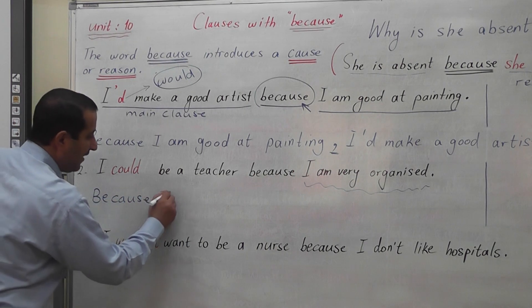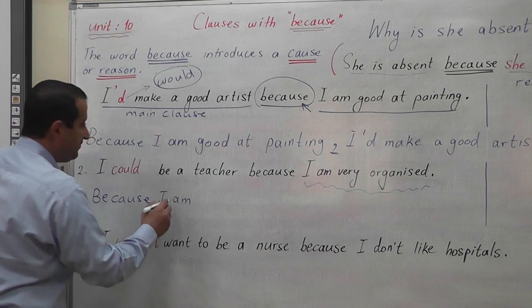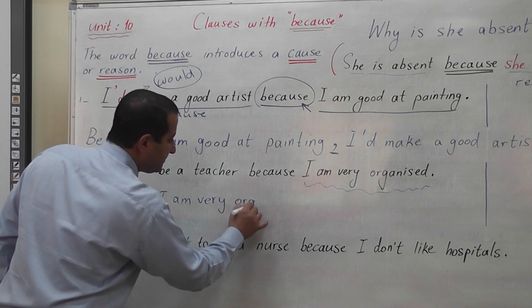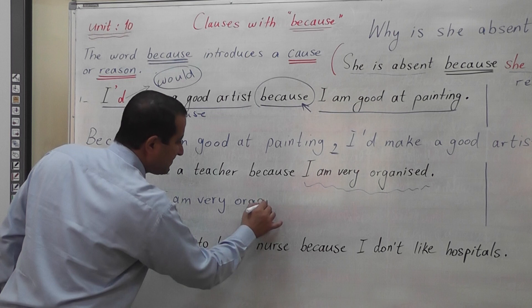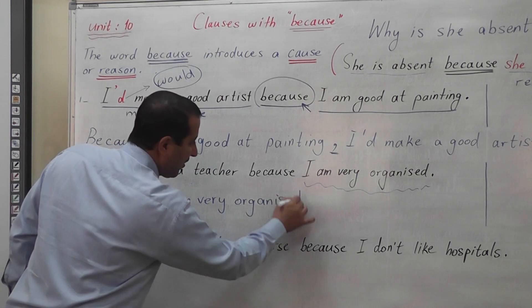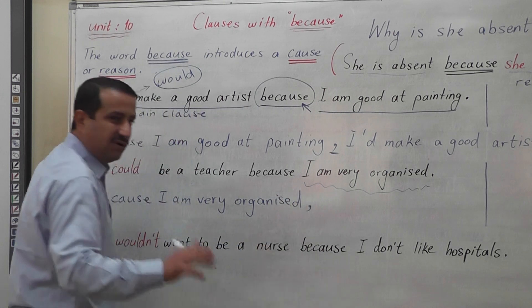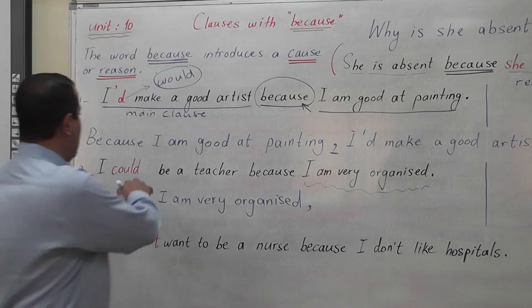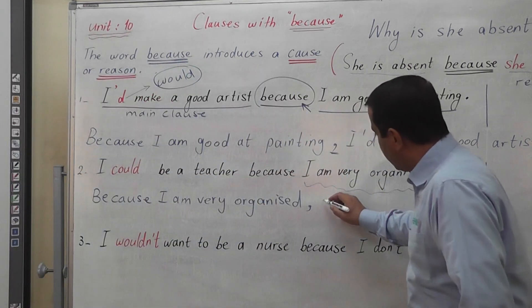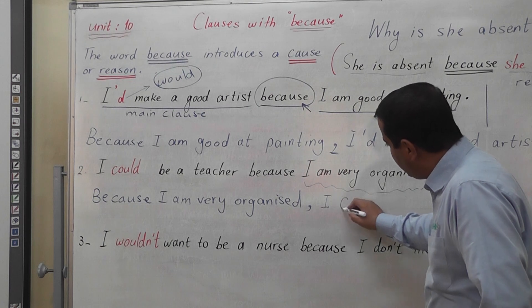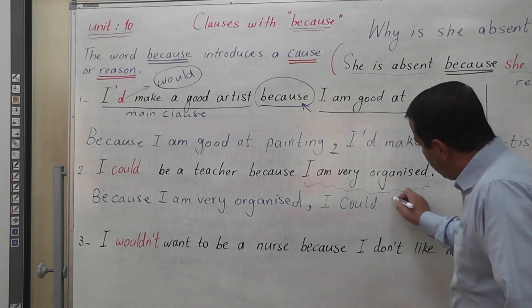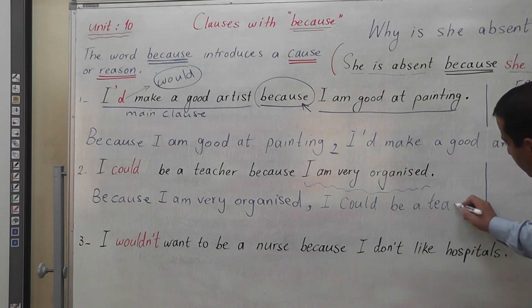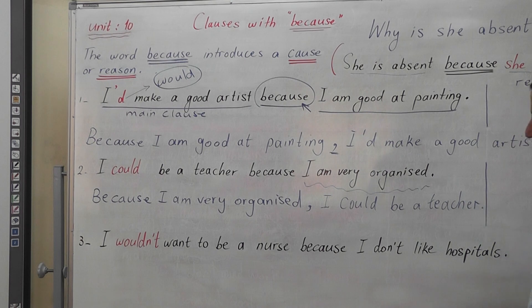Starting with BECAUSE, it becomes: 'Because I am very organized, I could be a teacher.' Notice we use a comma because we start with BECAUSE.